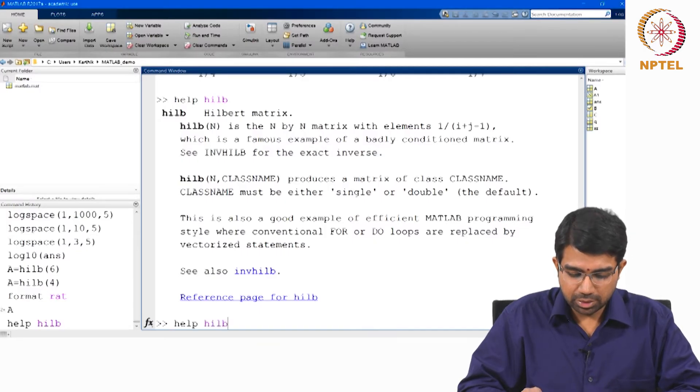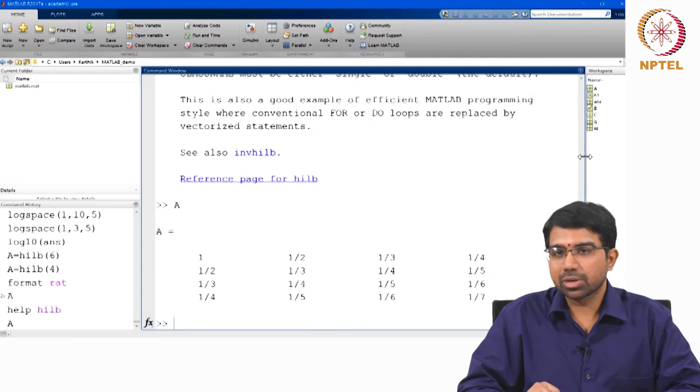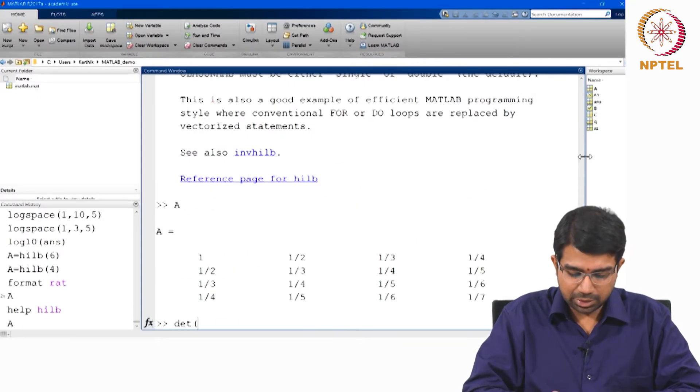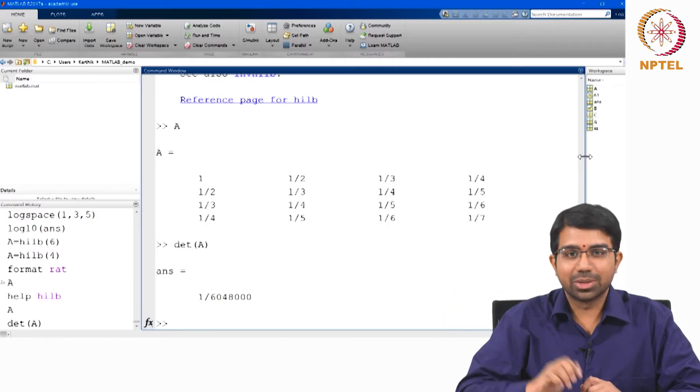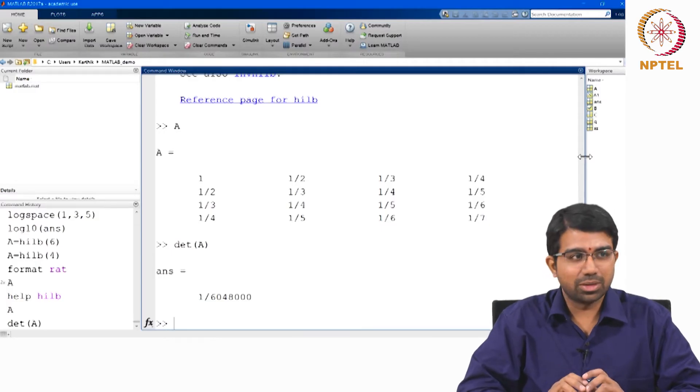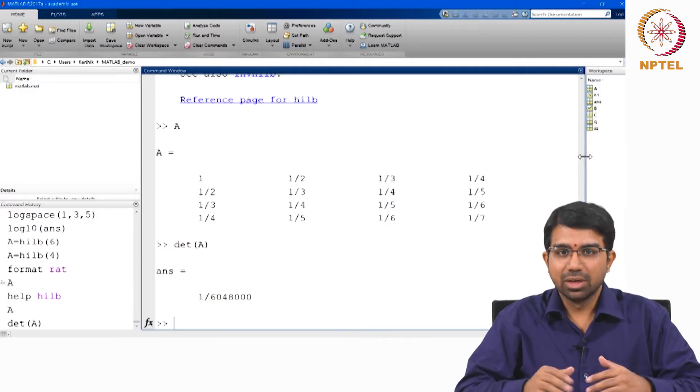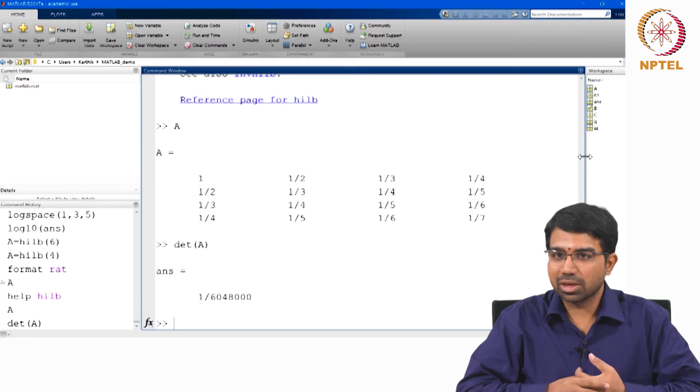So this is a useful matrix because the determinant of the matrix becomes vanishingly small. So even though this matrix is not singular, you will struggle to invert it. So this is always a classic example, a classic matrix that somebody looks at when you study linear algebra algorithms.